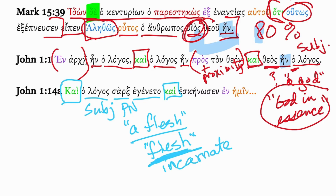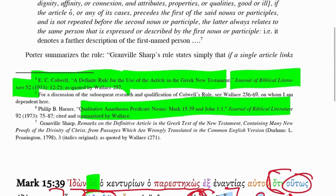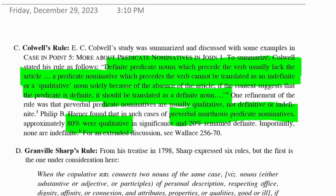So these are the rules. When the predicate nominative precedes the verb of being, it's typically anarthrous, but that does not mean that it is indefinite. That's Caldwell's rule, and we looked at some examples of that. I hope you found this helpful. Keep listening for other episodes.